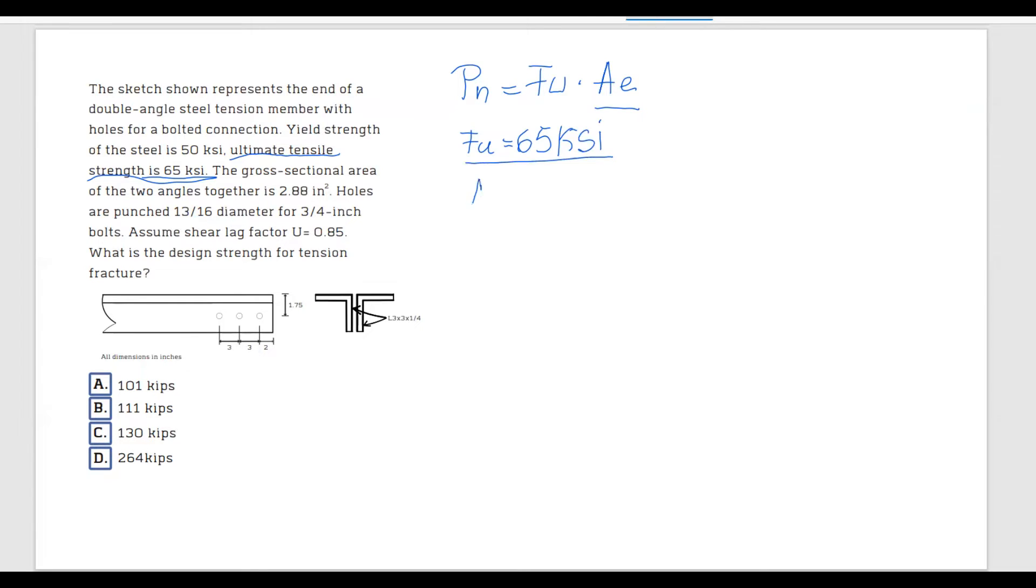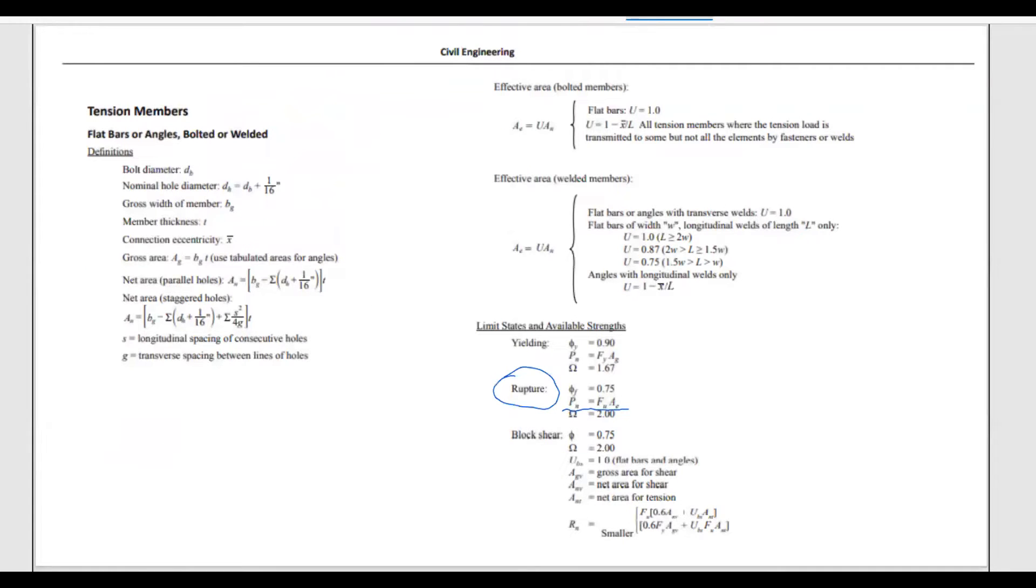And let's see, what is AE? Let's go back to FE handbook and let's see what AE is. AE is the effective area and we have bolted connections, so we're going to use this over here. So AE equals U times AN, where AN is the net area.